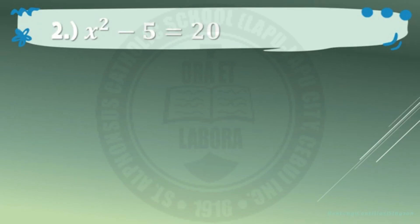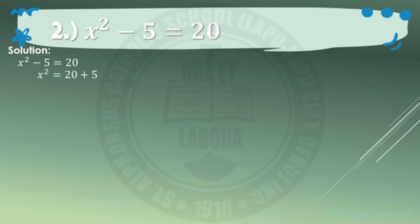Number 2: x squared minus 5 equals 20. Solution. First, write the given: x squared minus 5 equals 20. You need to isolate the quadratic term — negative 5 is not part of the quadratic term. Transpose negative 5 to the other side, resulting in x squared equals 20 plus 5. Simplify: x squared equals 25.